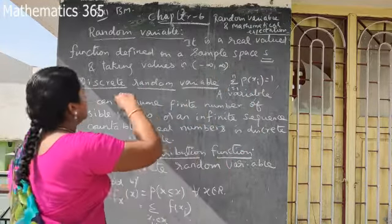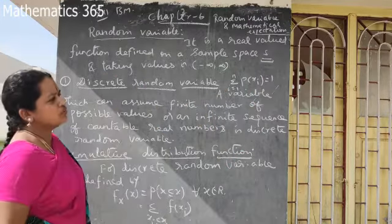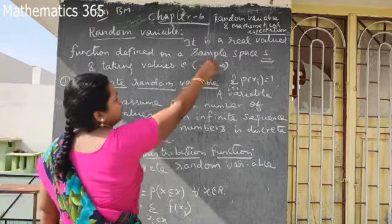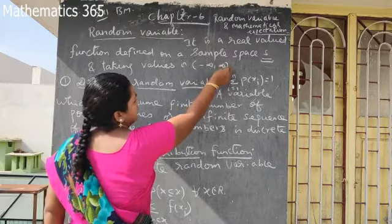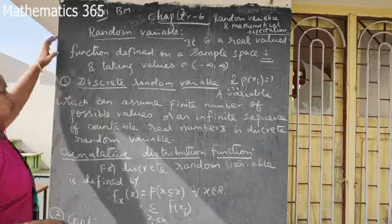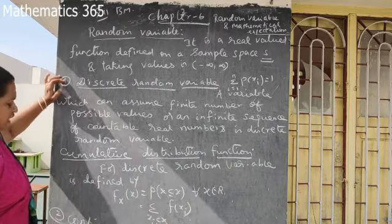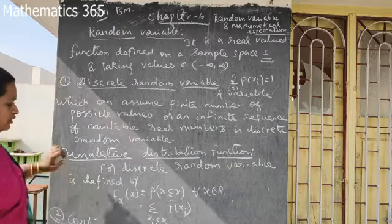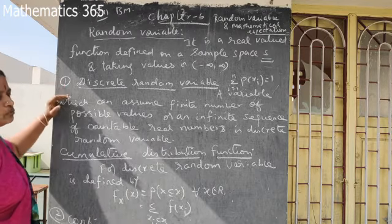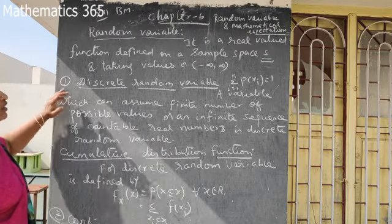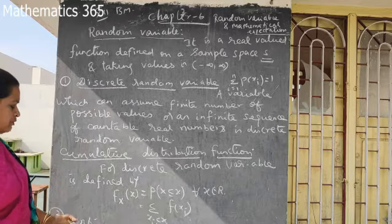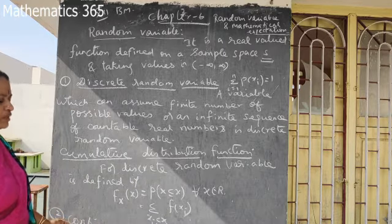A random variable takes values from minus infinity to infinity. There are two types of random variables: one is a discrete random variable, and one is a continuous random variable. This is the key difference between the two types.